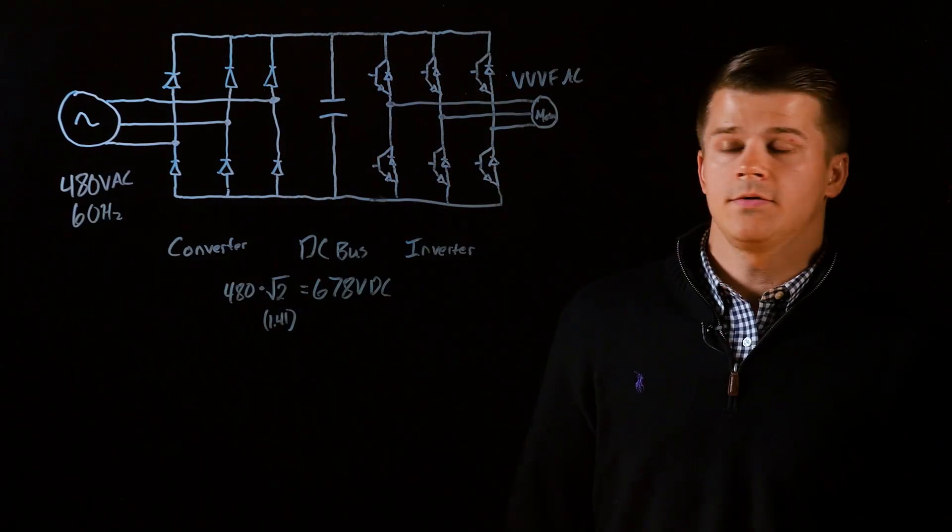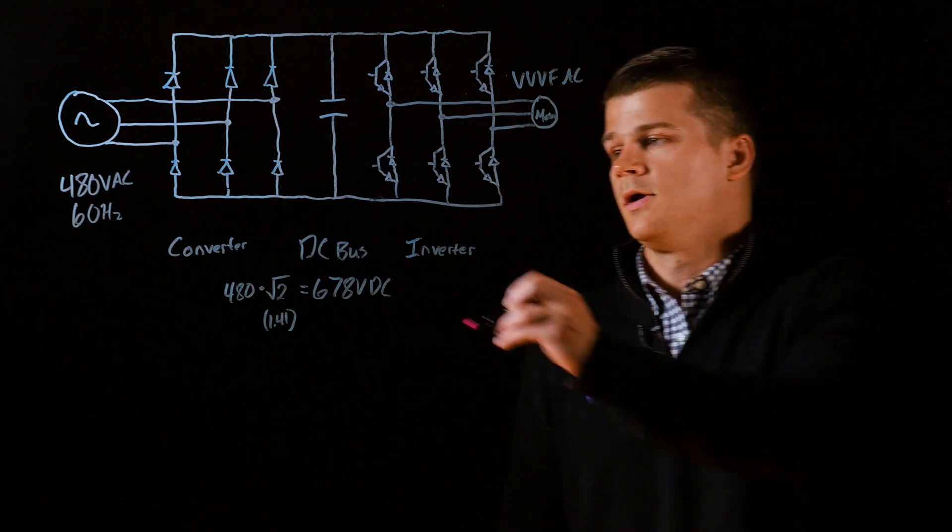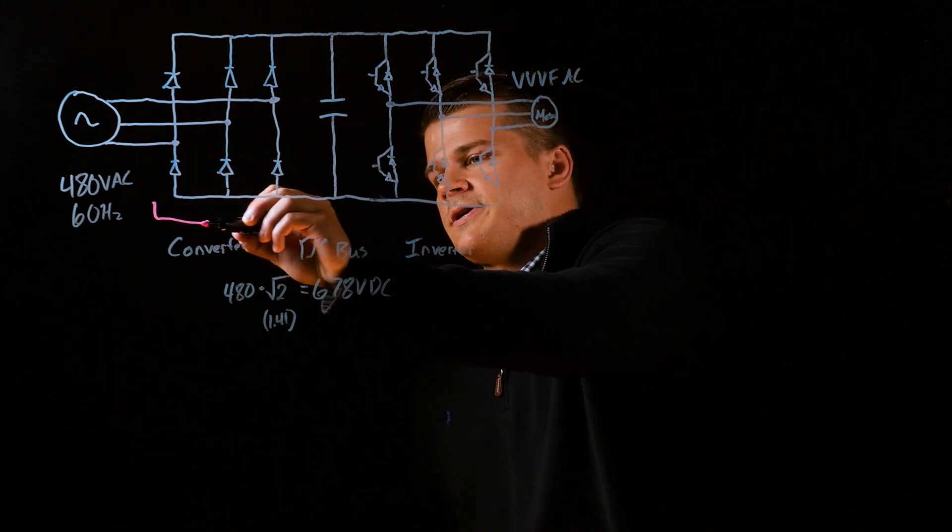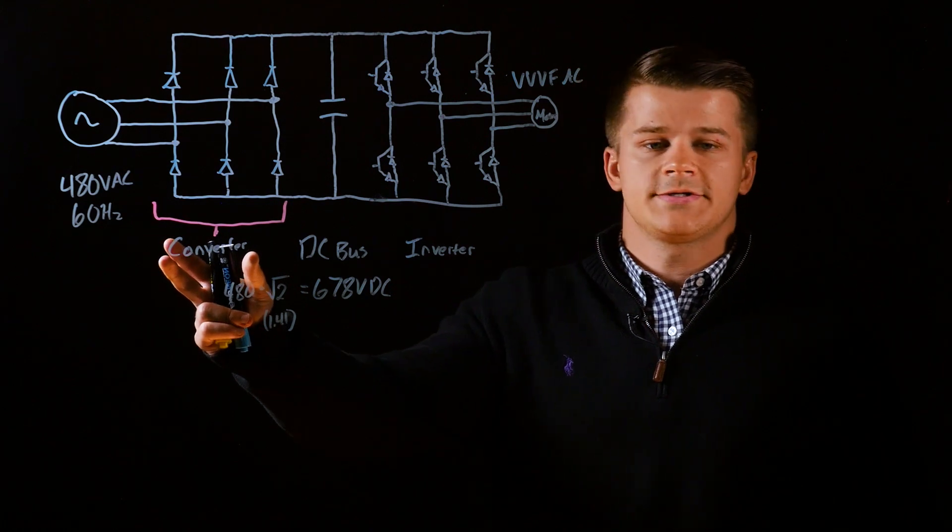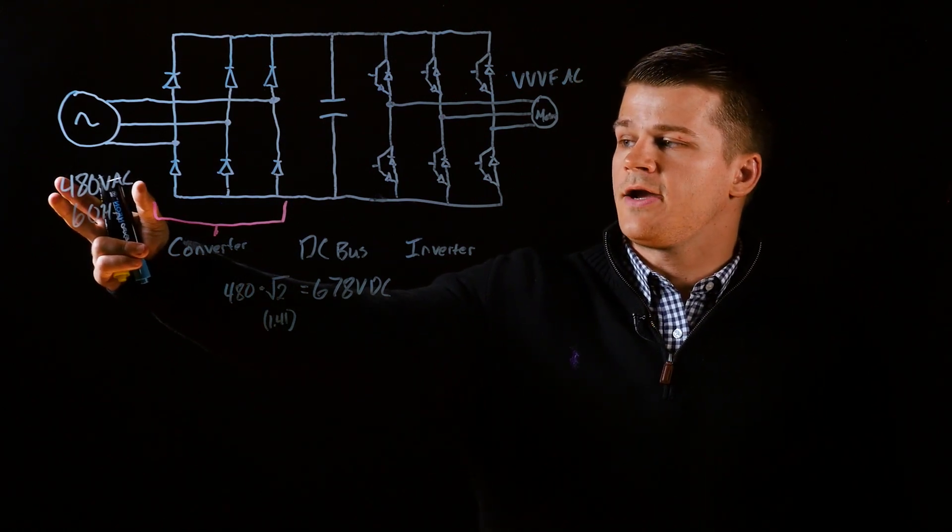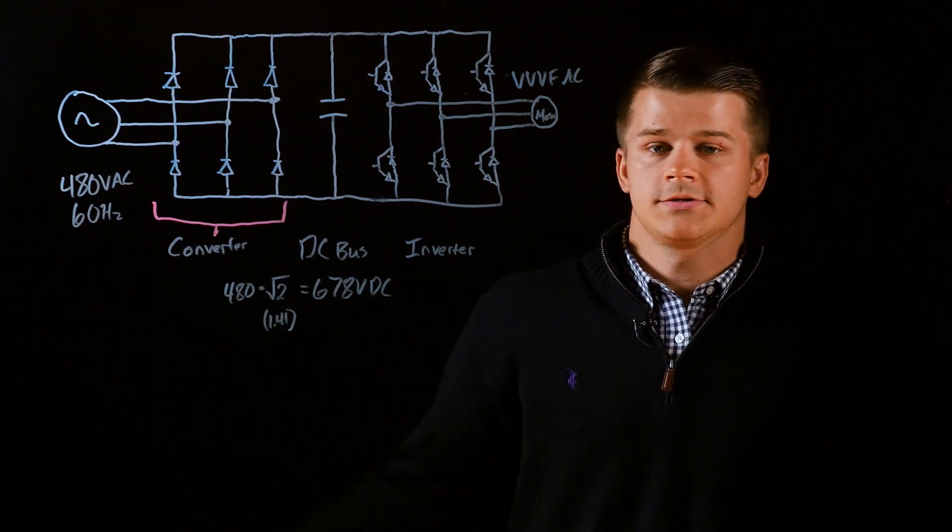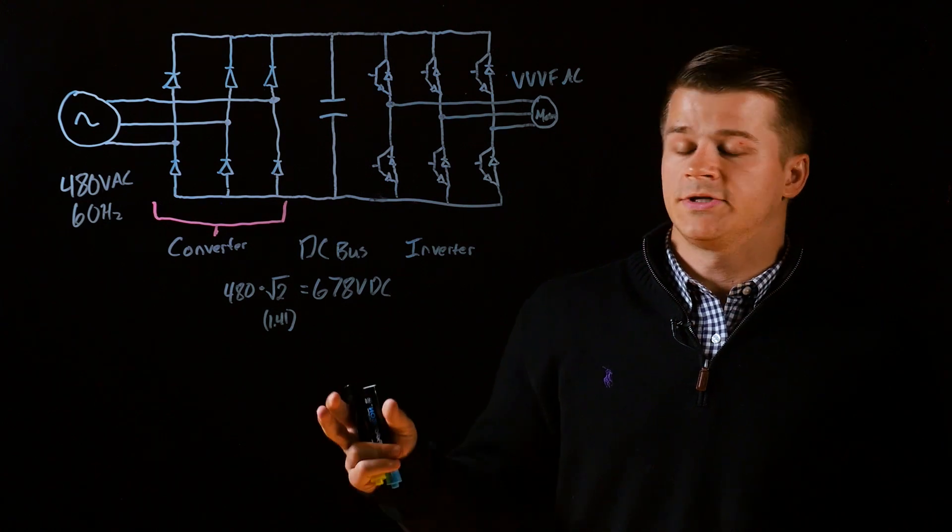All right, so this is kind of a general overview of a basic VFD system. The first part we have here is the converter section that takes your 480 volt AC 60 Hertz input and converts it into a DC voltage.